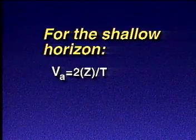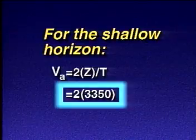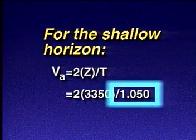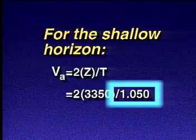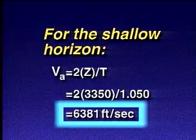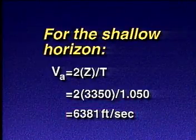The total distance traveled by the seismic energy is twice the well depth, or two times 3,350 feet, divided by the two-way travel time of 1.050 seconds, giving us an average velocity of 6,381 feet per second.